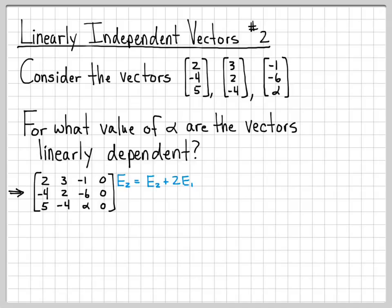So if I do some row operations, let equation two equal equation two plus two times E1, and equation three equal equation three minus two and a half E1, I can get this next augmented matrix. So I forced zeros here in this first element.